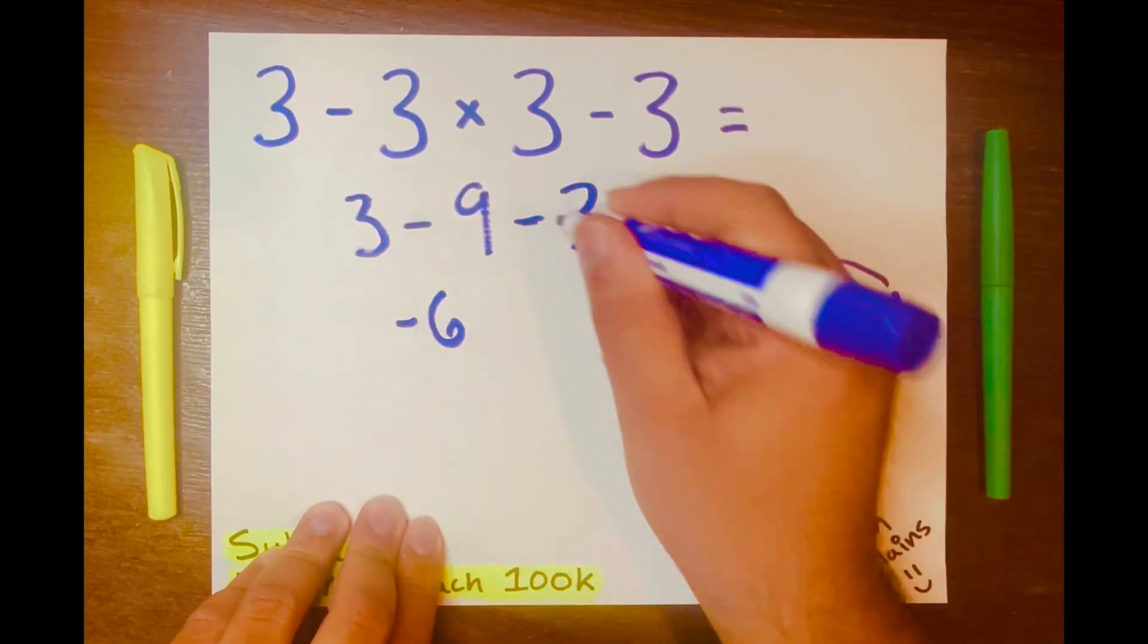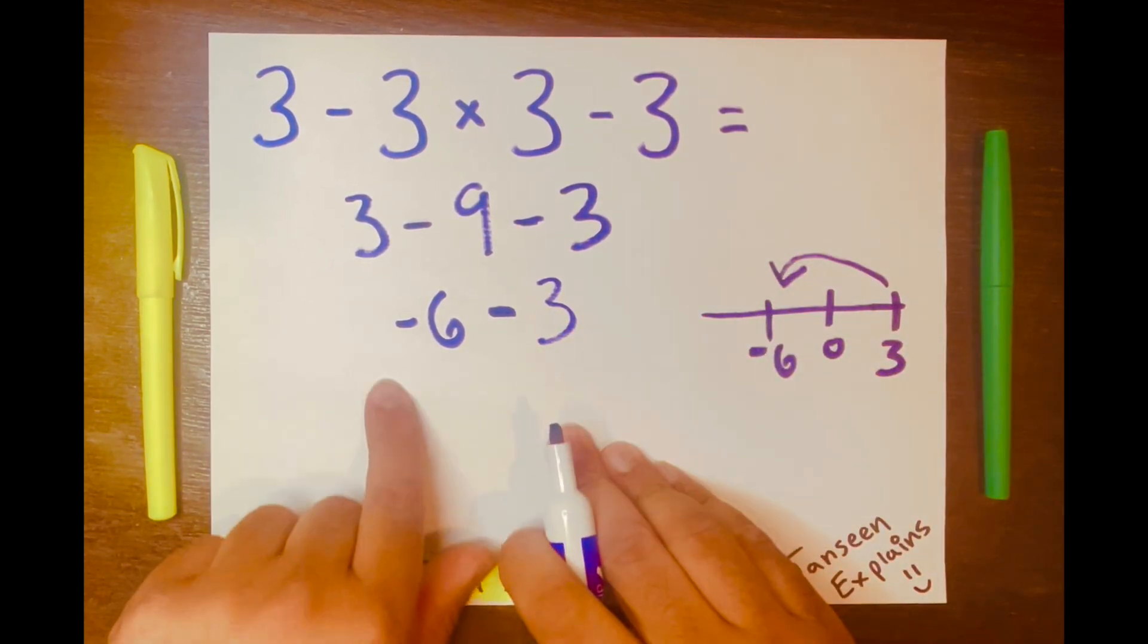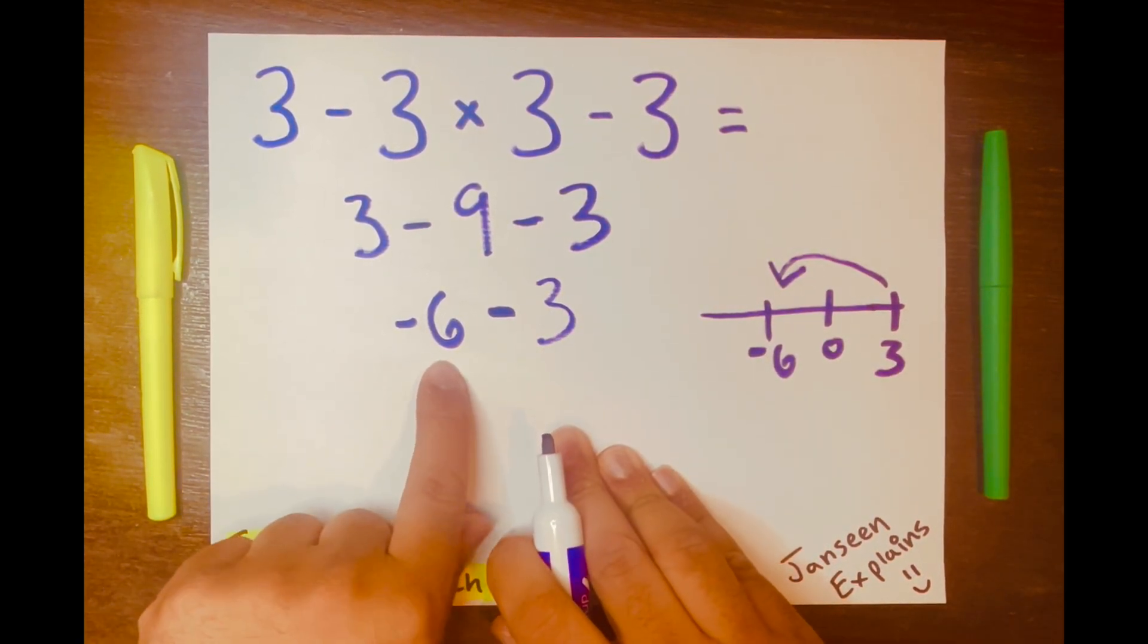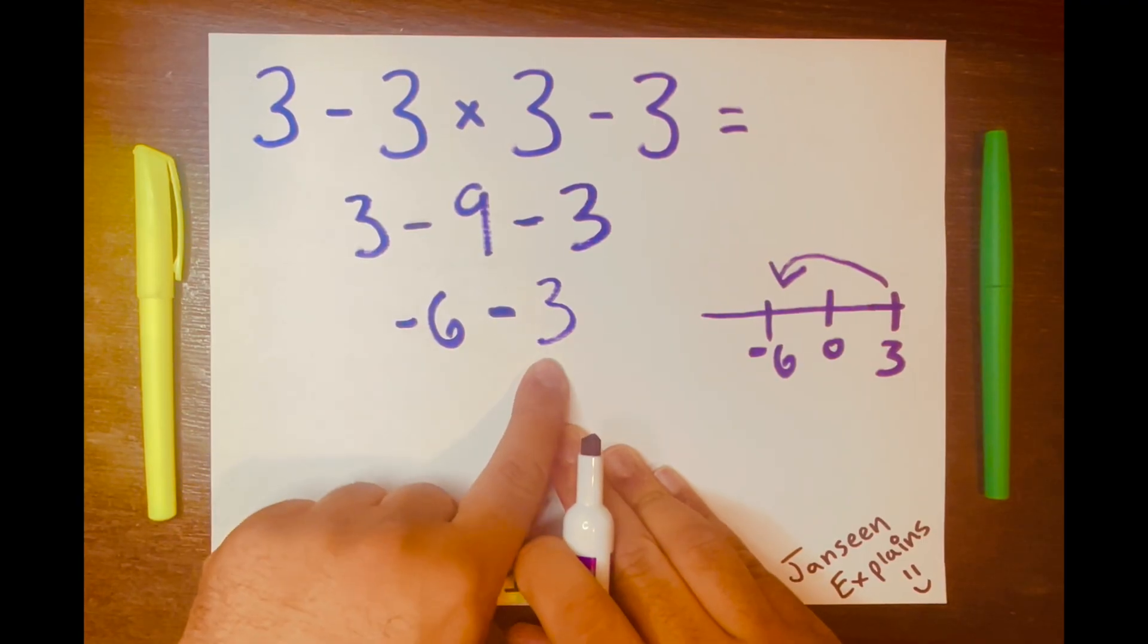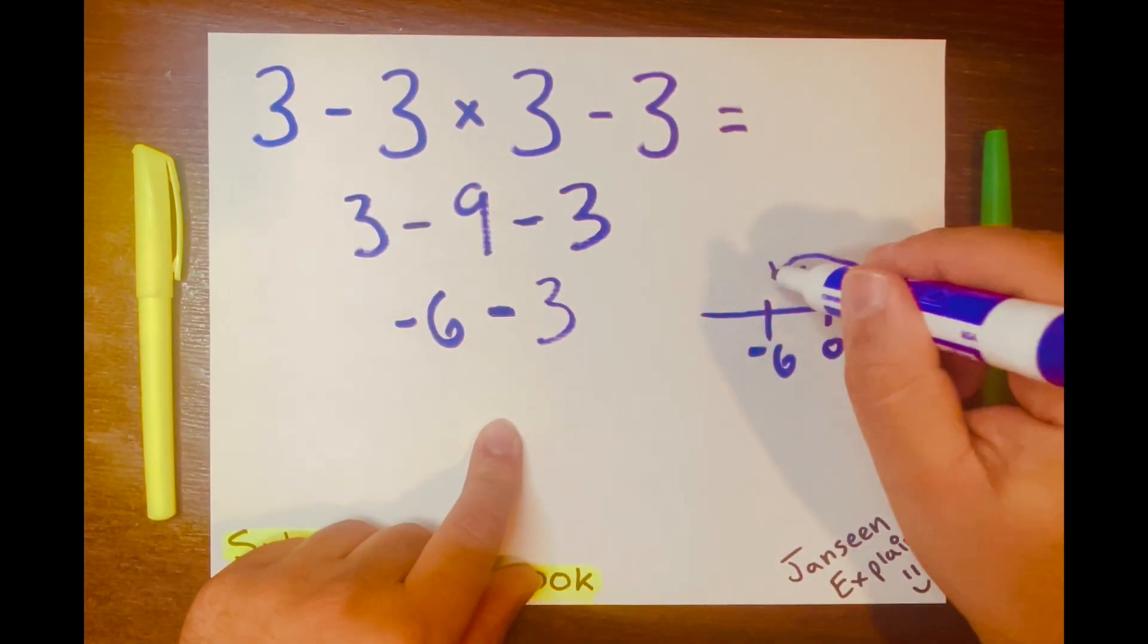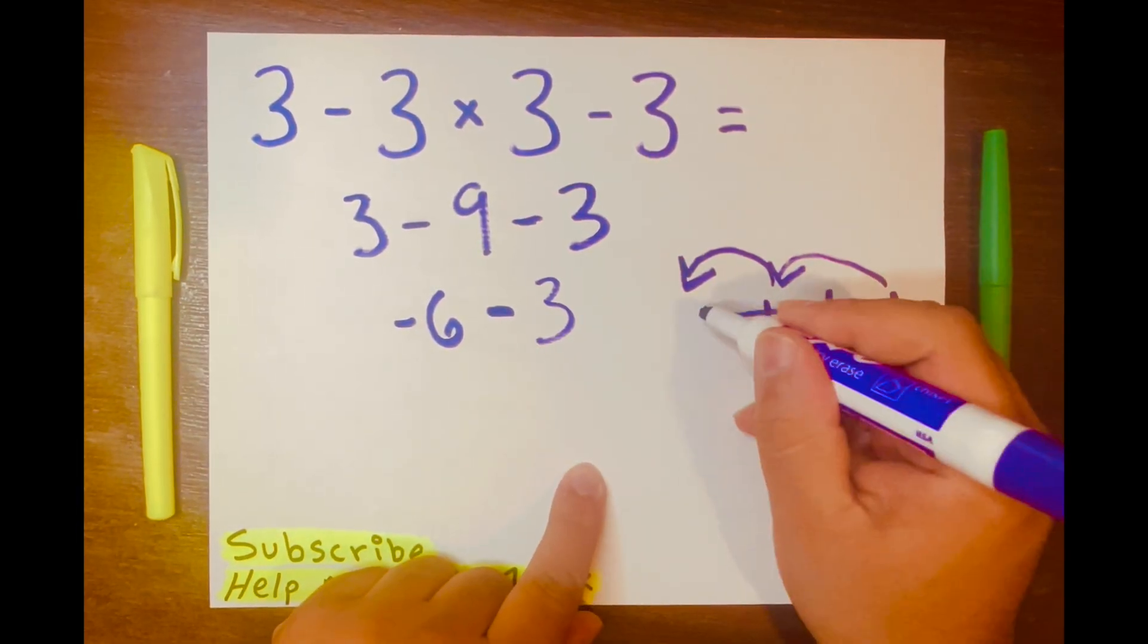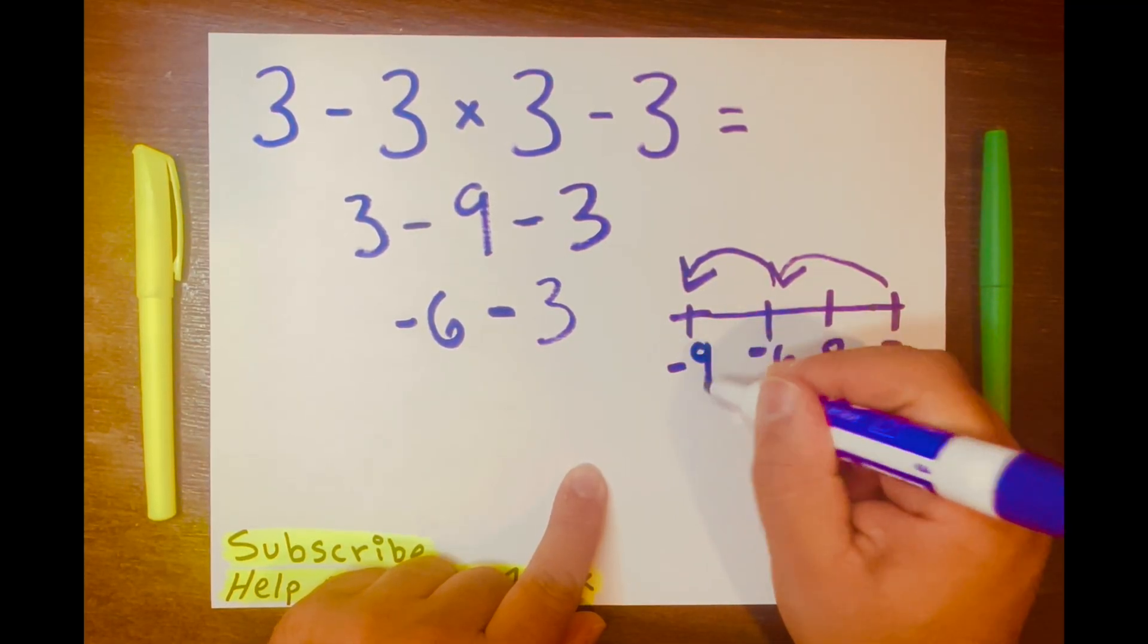So it's negative 6. Bring down the subtraction symbol down and the 3 down. Now you have negative 6 minus 3, and all you have to do is move back three more spaces to the left, and you'll definitely land on 9.